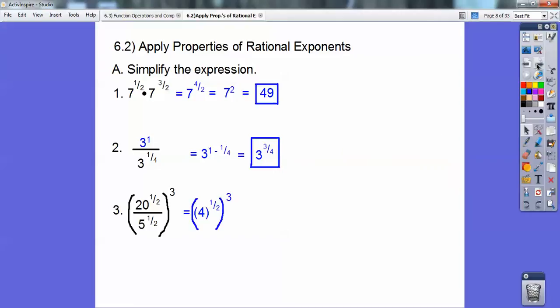Okay, so 4 to the 1 half to the third, and 4 to the 1 half is the same as the square root of 4. The square root of 4 is 2, 2 to the third is 8.